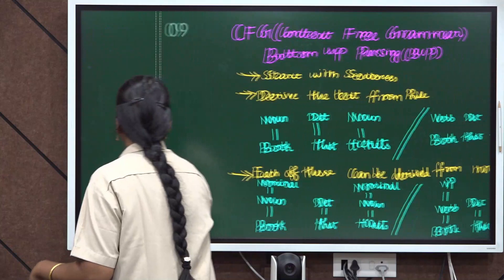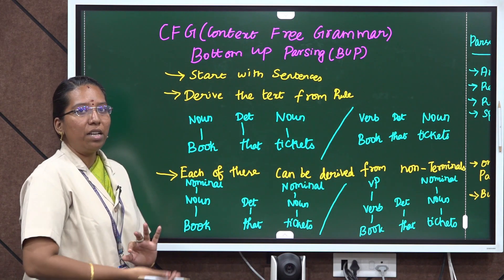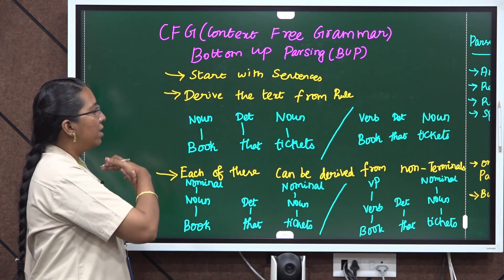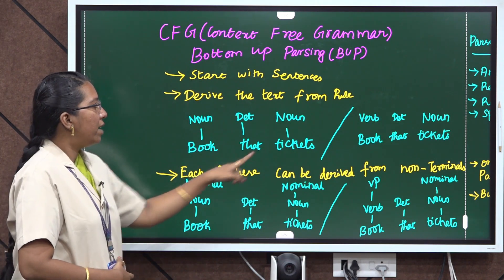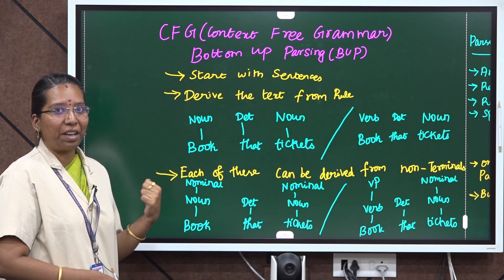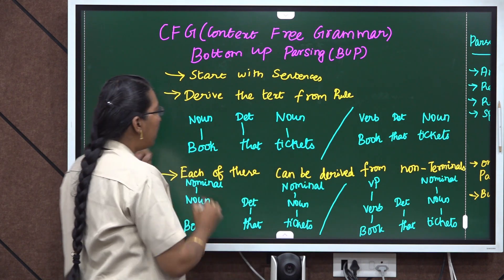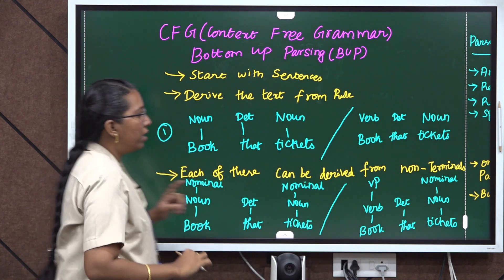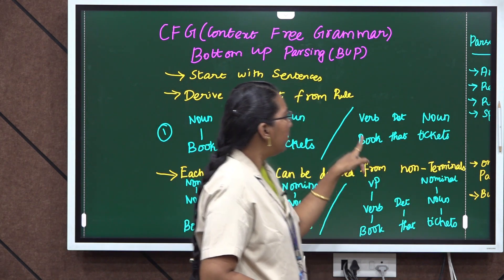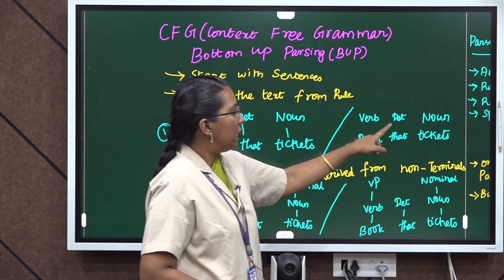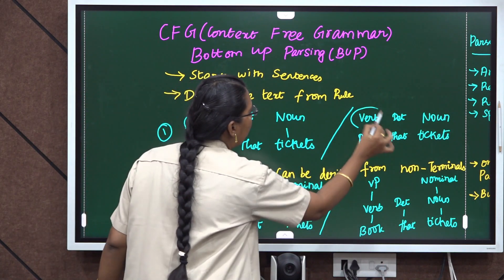Another example: bottom-up parsing. Bottom-up parsing means we start with the sentence and go back to the starting symbol. Same sentence here — 'Book that ticket.' There is a confusion: 'book' could be a noun, 'that' is a determiner, 'ticket' is a noun. Another interpretation is that 'book' may be a verb, 'that' is a determiner, 'ticket' is a noun. So book may be a noun or a verb.